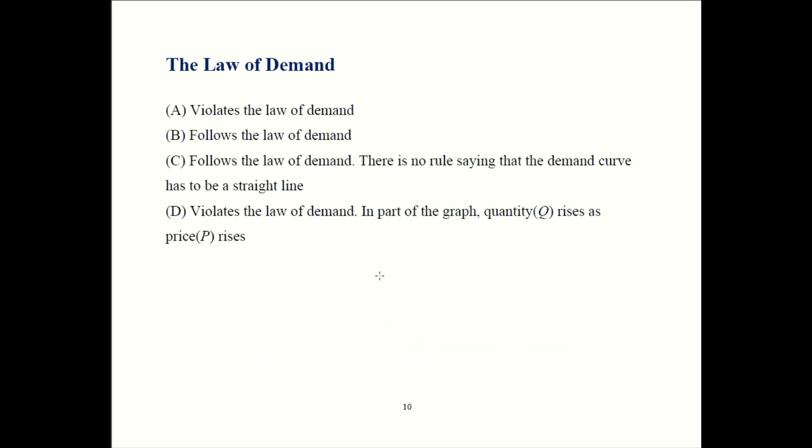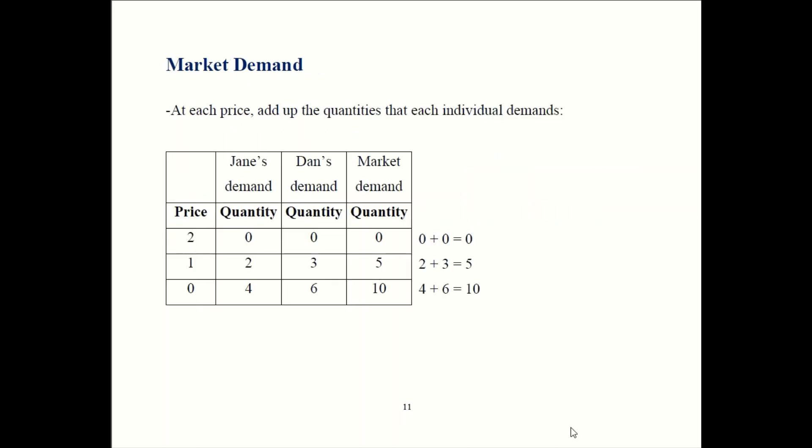We see that graphs B and C follow the law of demand, but graphs A and D violate it. That's how individual demand curves work. There is also what's called the market demand or the aggregate demand. That comes from just adding together the individual demand curves.